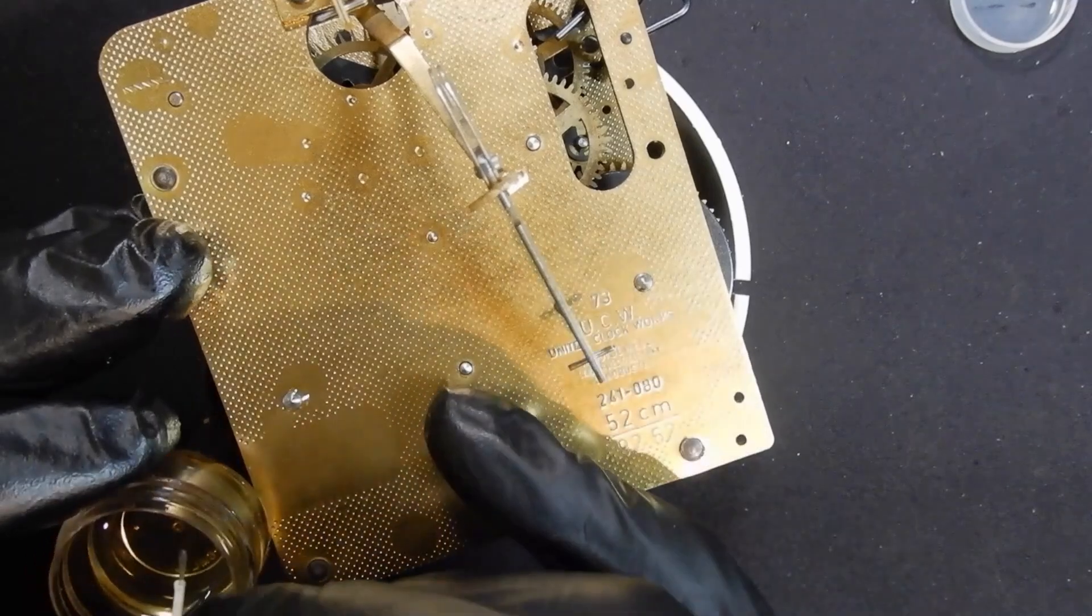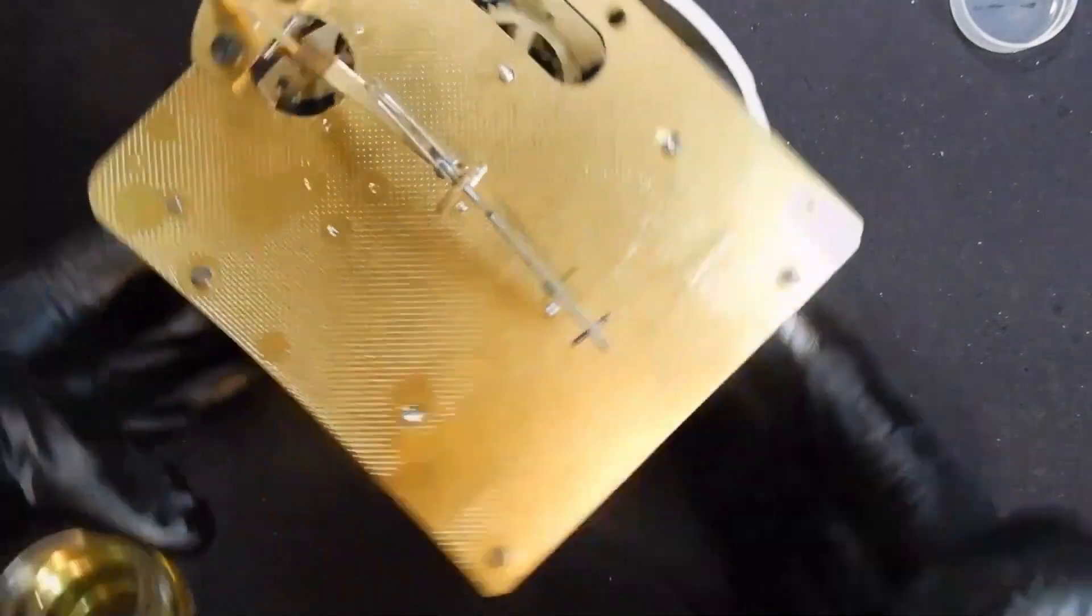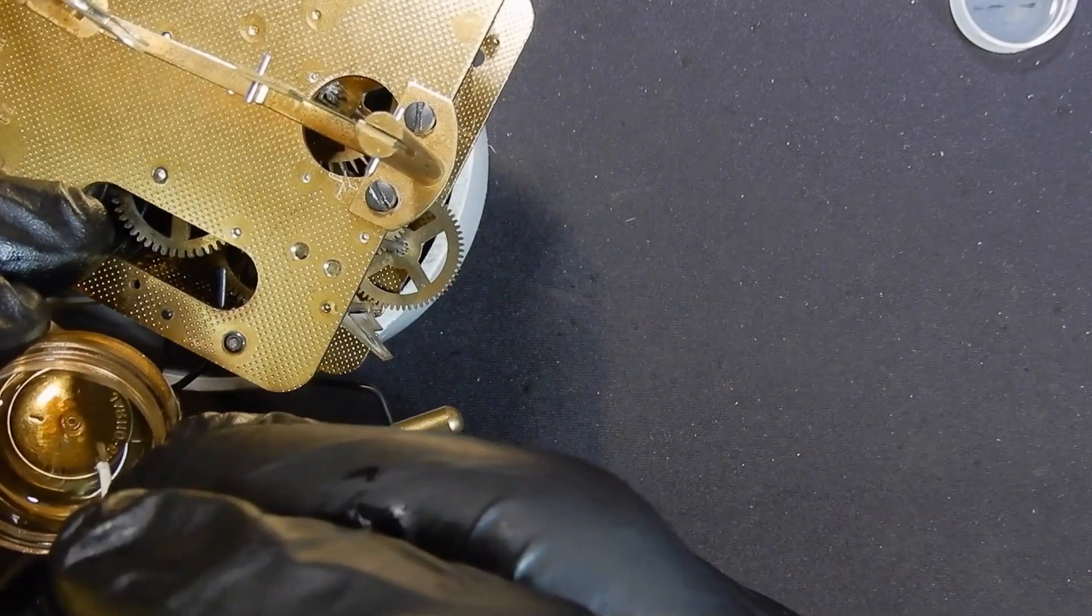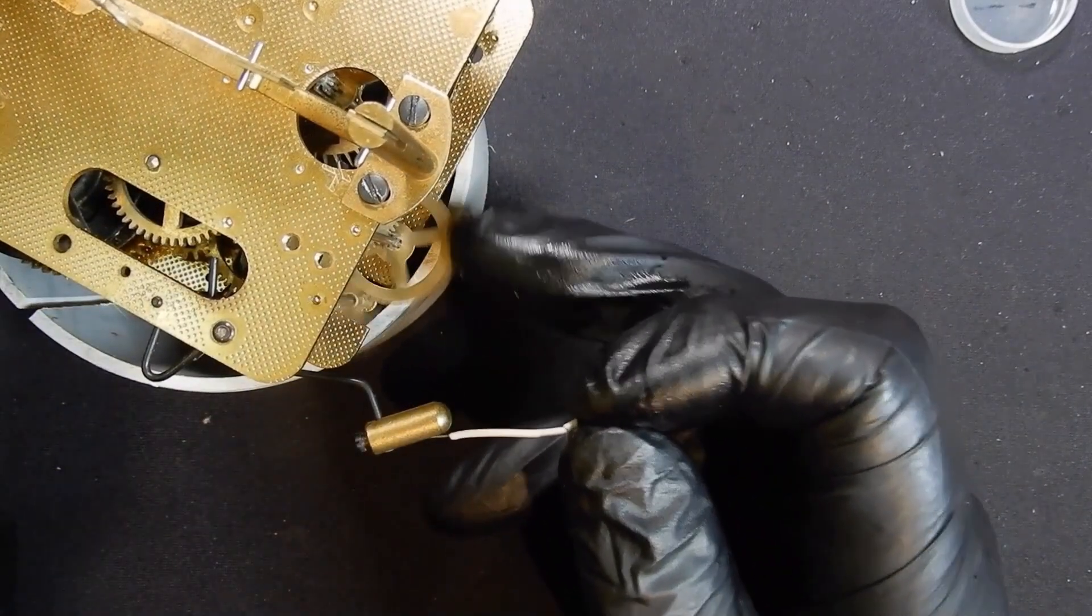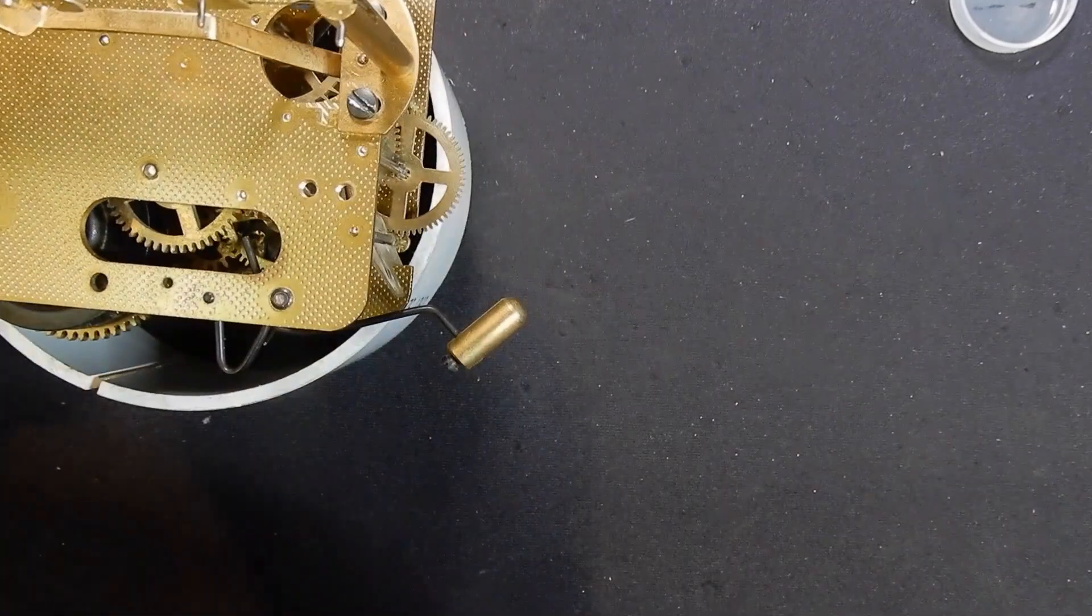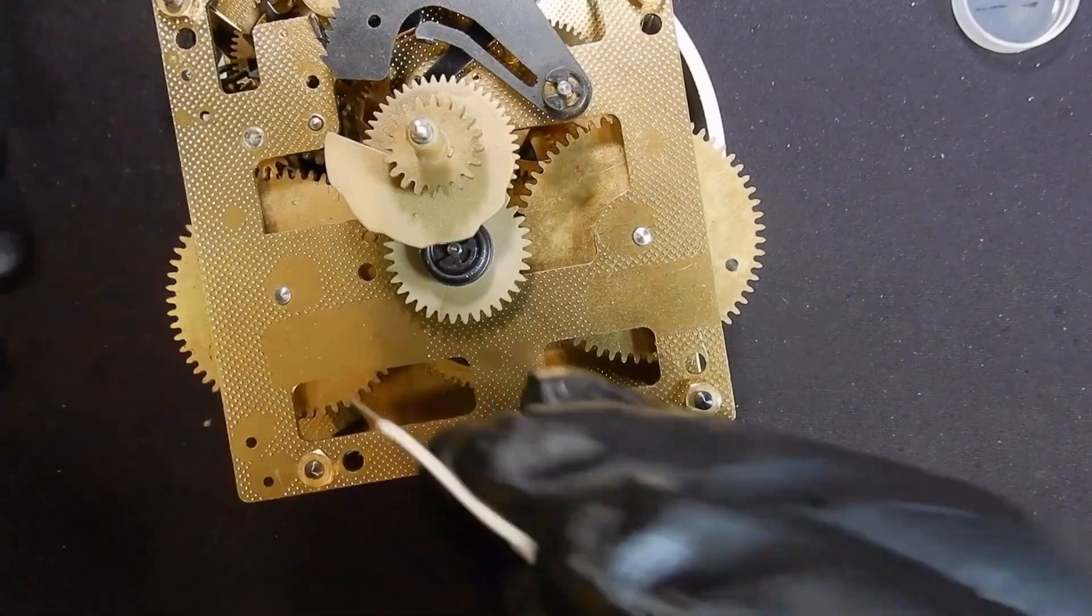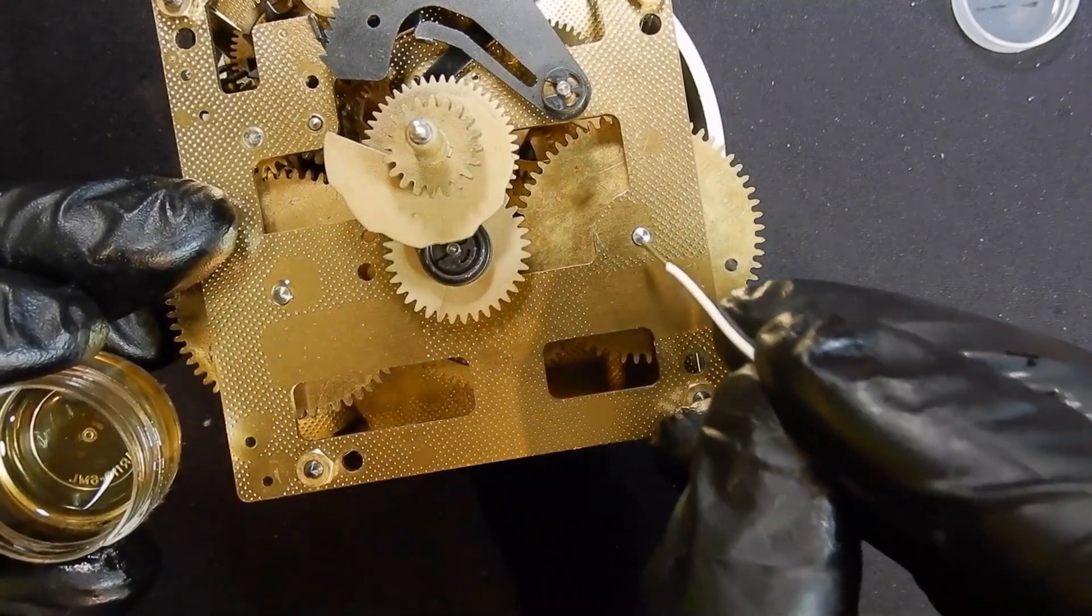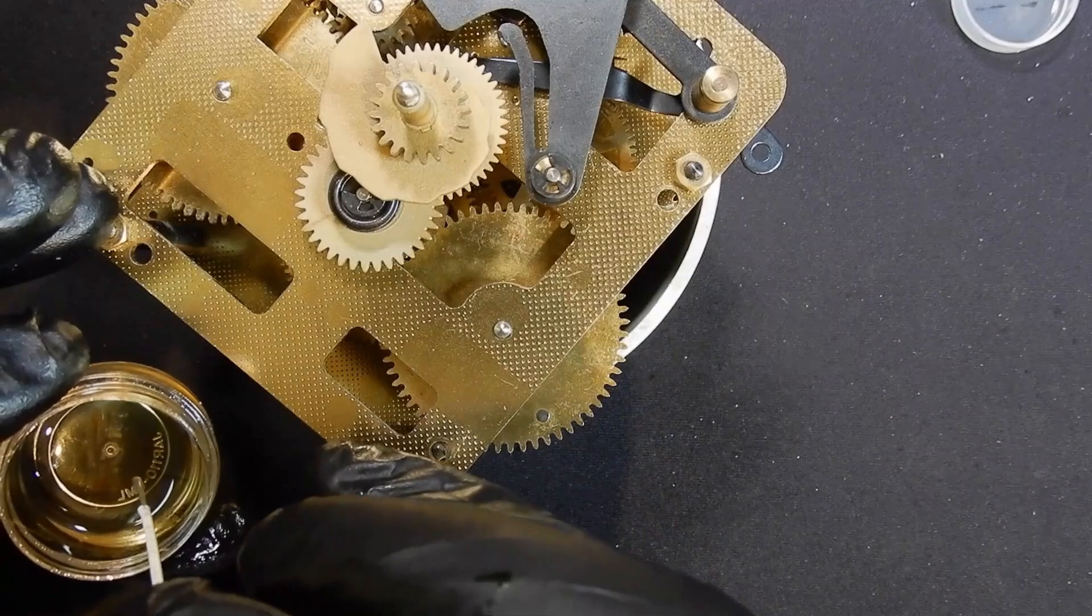And one drop on all the rest. When the pivots there, one on there, turn it around, one on the fly, warning wheel, and the star wheel. All right, now we'll turn that over and we'll do the other side, starting with a couple of drops on the great wheel of both trains. Put a couple on the rack, that's got a decent size pin under it.